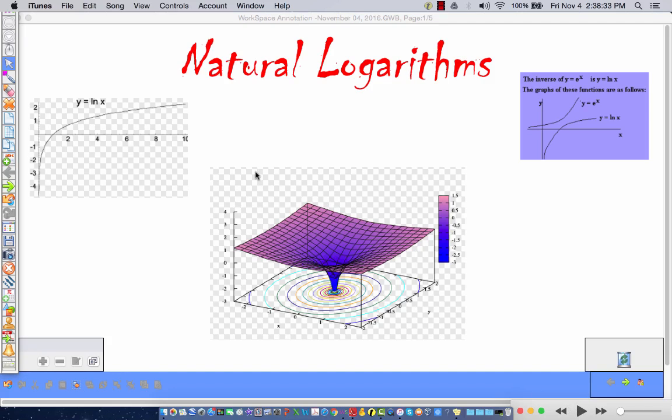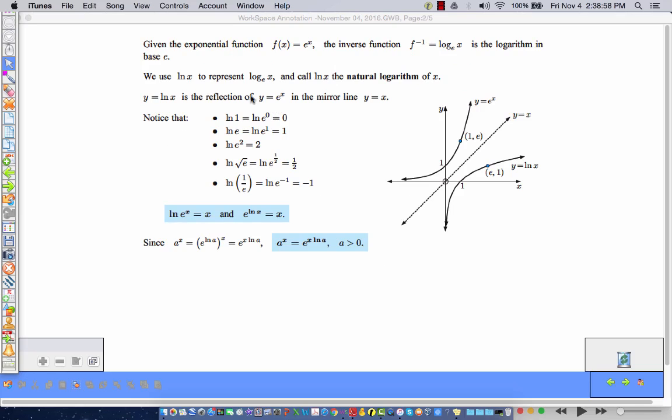Okay, so natural logs, what are those? Those are logarithms with a special base E, the number E. We've already talked about the number E, and we use a base E in logarithms so much that the natural log gets its own special notation. We use LN.